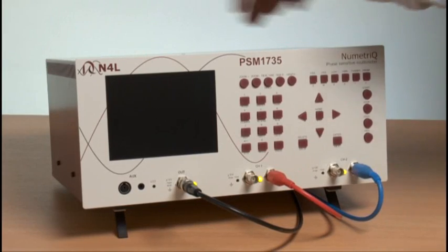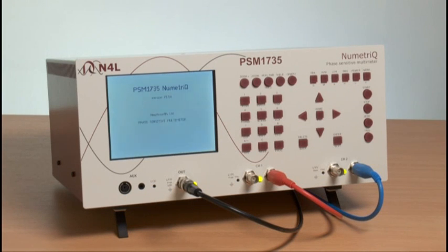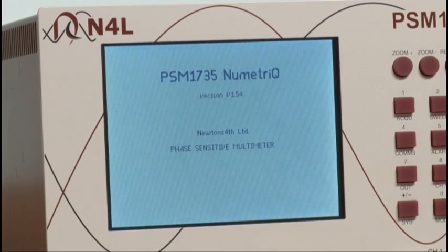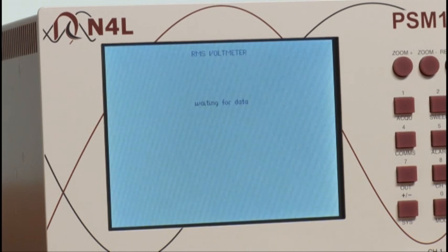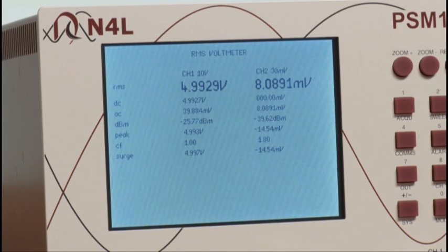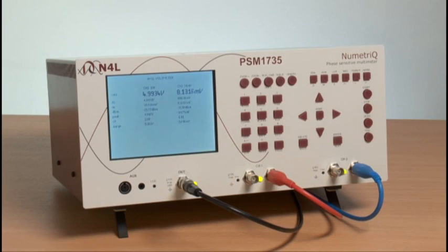If we now switch on the instrument, there will be a power-up routine. Then the default measurement screen will be presented showing RMS voltage measurements on each of the PSM 1735 measurement channels. Here you can see 4.99 volts, which is predominantly the DC voltage on one side of the injection resistor, and 8 millivolts, which is the AC component measured on the other side.